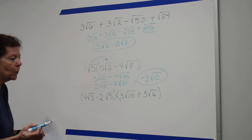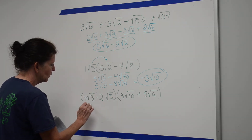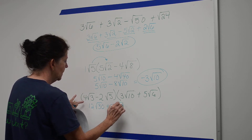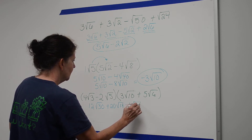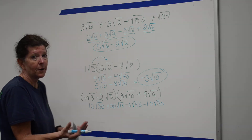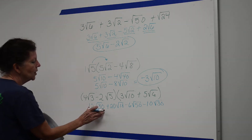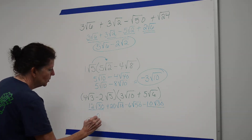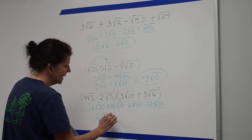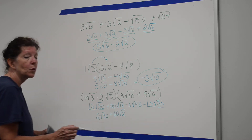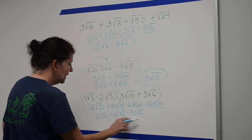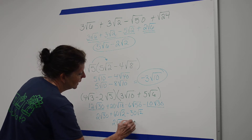Down here I have FOIL. First gives 12 on the square root of 30. Outside gives 20 on the square root of 18. Inside gives negative 6 on the square root of 50. Last gives negative 10 on the square root of 30. Since 30 can't be broken down, I combine those two terms: 2 on the square root of 30. Then 18 is 9 times 2, so 3 times 20 is 60 on the square root of 2. And 50 is 25 times 2, so 5 times 6 is 30 on the square root of 2. Combining gives 2 on the square root of 30 plus 30 on the square root of 2.